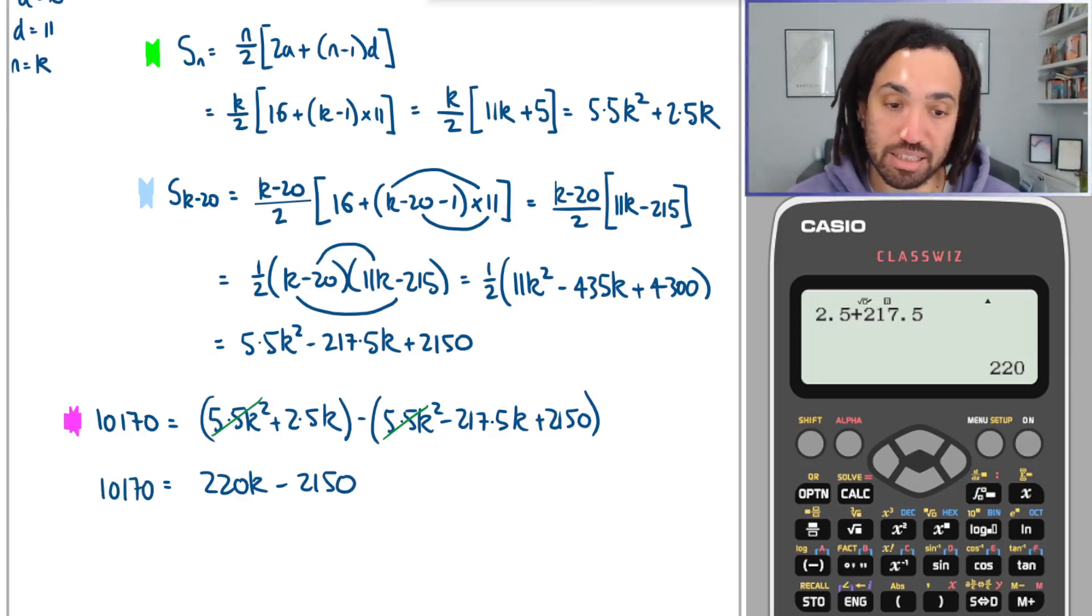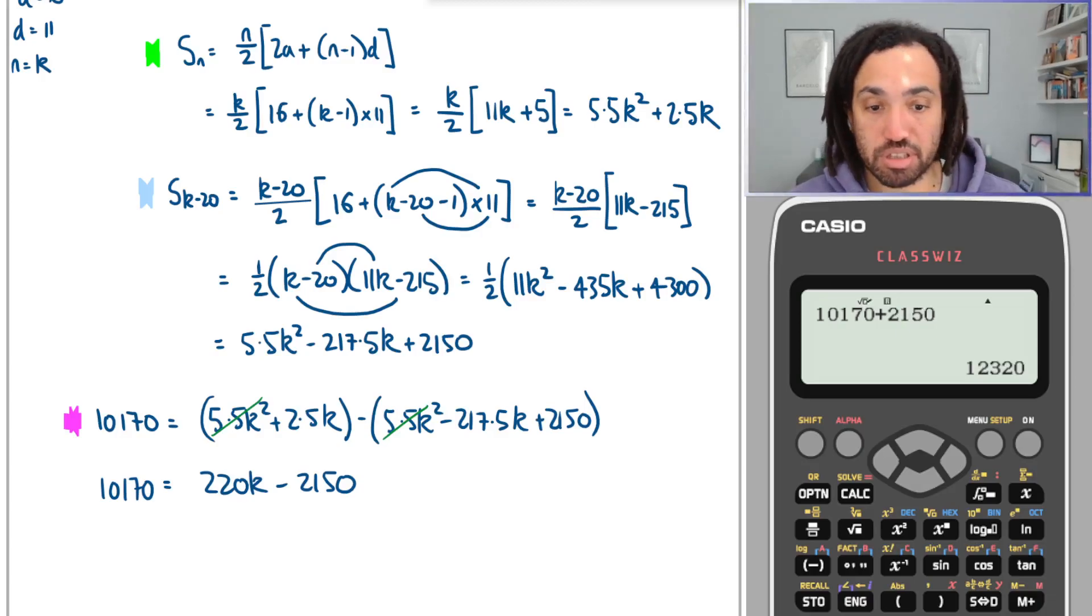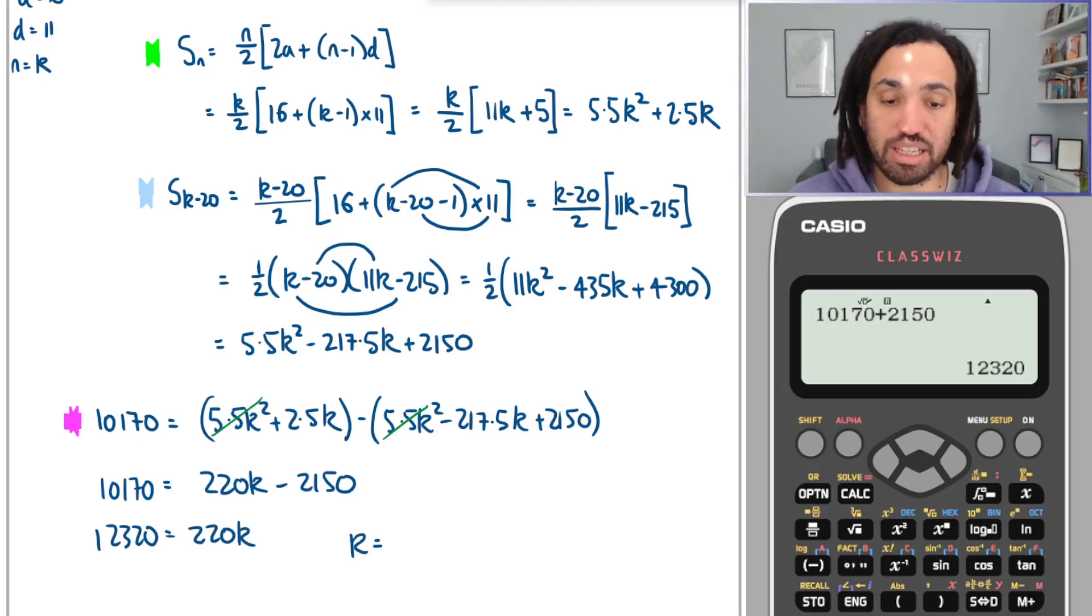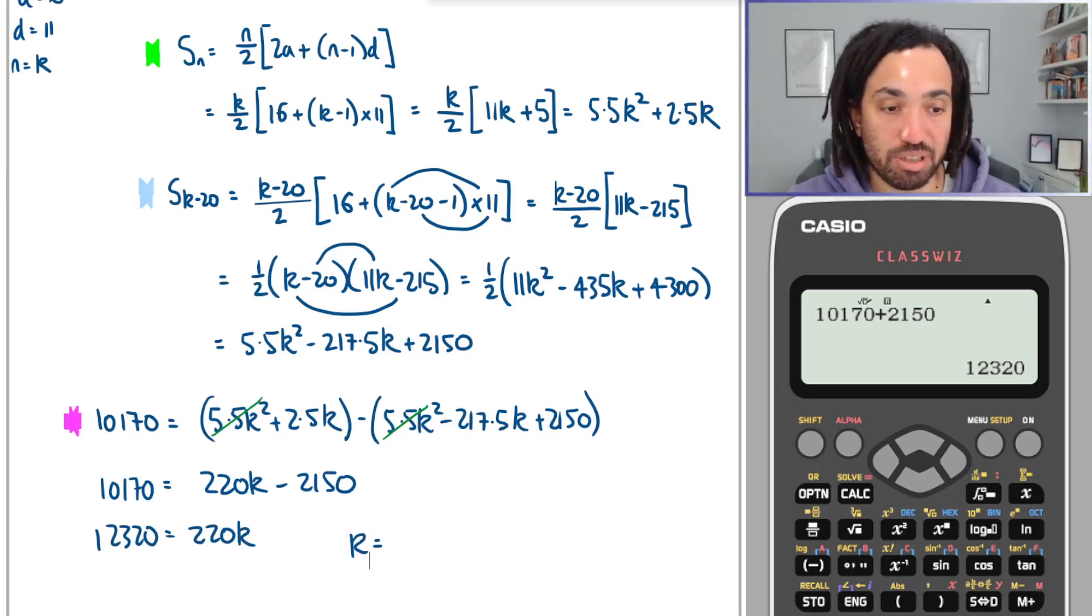So add that over to that side. My mental math today has been pretty shocking, apologies. But the calculator has saved me. So 12,320 is equal to 220k. So therefore we should find k, and fingers crossed this is a whole number because it has to be a whole number. If it's not, we've made a mistake. Bosh!